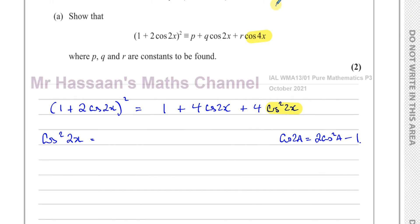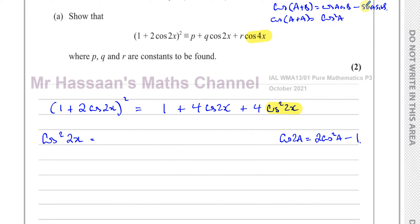This identity is not in our formula book, but it's based on the addition formula: cos(A+B) = cosA·cosB − sinA·sinB. If you set both angles equal to a, cos2a becomes cos²a − sin²a. Then replacing sin²a with 1 − cos²a using the Pythagorean identity gives cos²a − (1 − cos²a) = 2cos²a − 1.